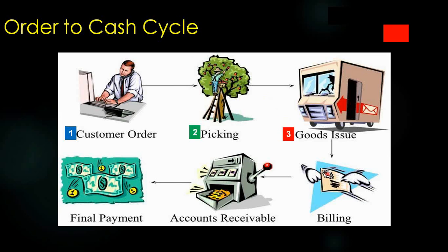The third step is goods issue — we issue the goods to the customer, meaning the truck or courier van will leave the company. Step two is basically making the goods ready for the customer so they can pick up or we can send them. Step three, goods issue, is when the goods actually leave our company premises.